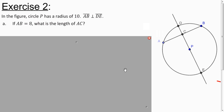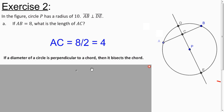Okay, what about this one? Let's say they tell us the radius is 10. And they tell us that AB is perpendicular to DE. So if AB is 8, what's AC? Well, you know AC is going to be half of it. Because if the diameter is perpendicular to the chord, then it bisects the chord. So half of 8 is 4.